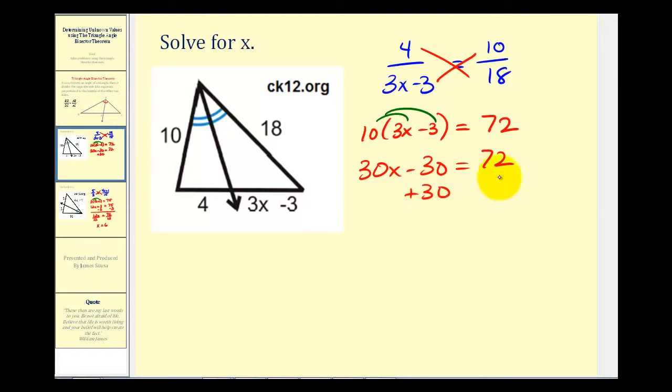Add 30 to both sides. So we have 30X equals 102. Now we need to compute 102 divided by 30.